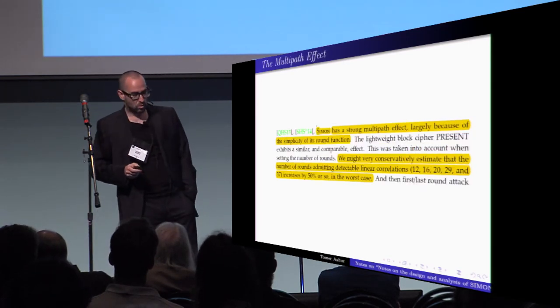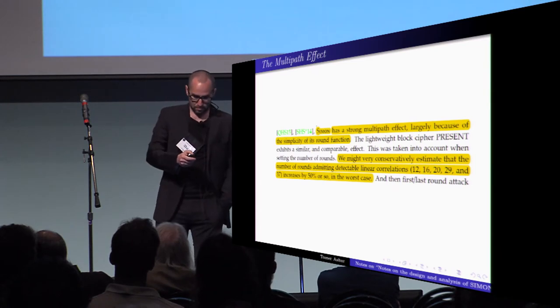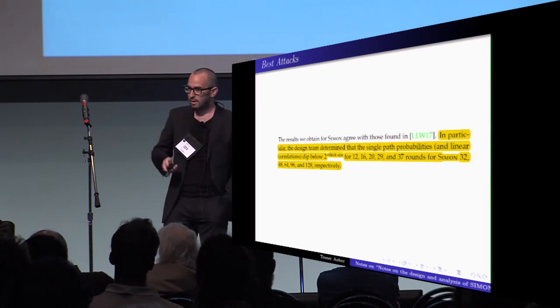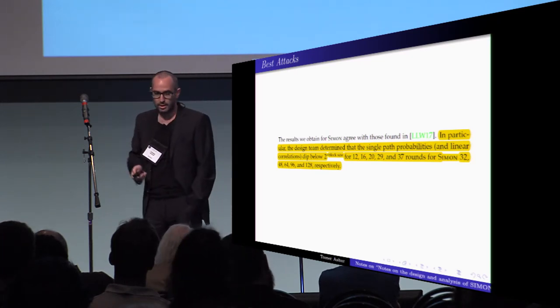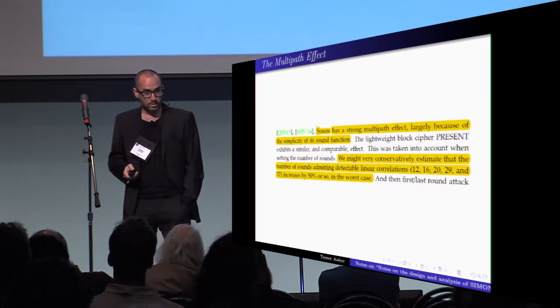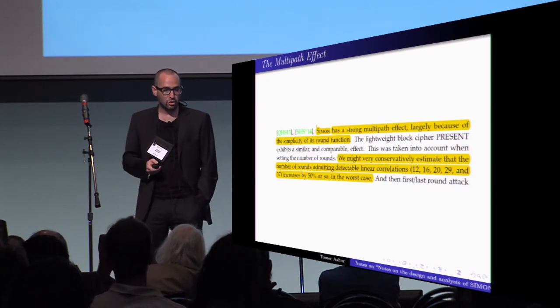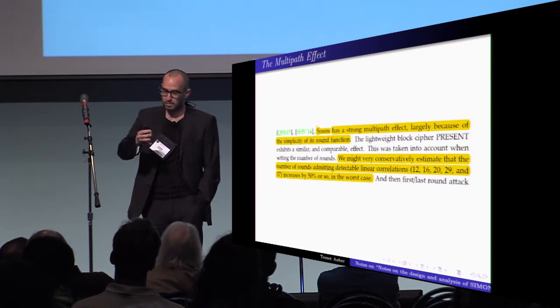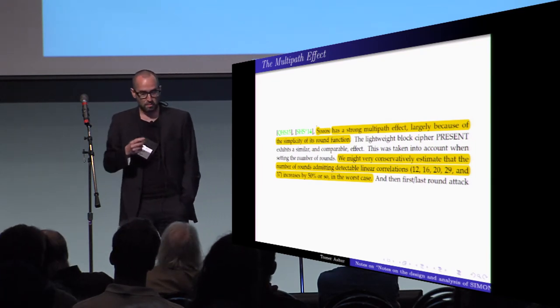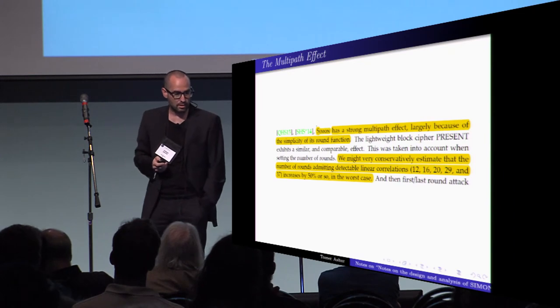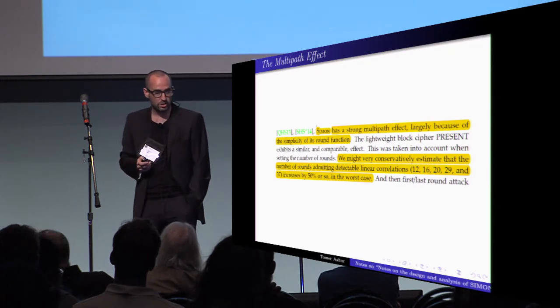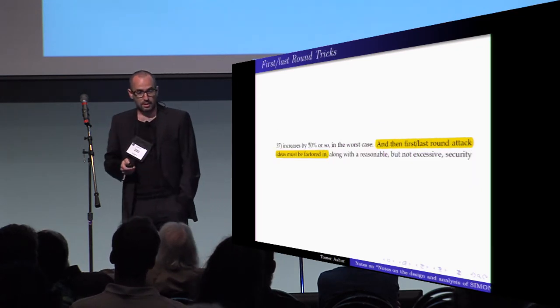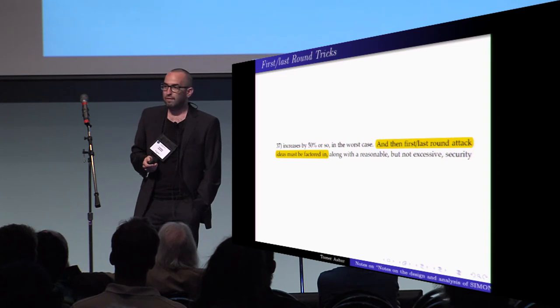I'll talk about that a bit more later. So that's the number of rounds they're saying that is the best that academics could find, and they agree with that. And then they're saying that Simon has a strong multipath effect largely because of the simplicity of its round function, and we can estimate it, we might very conservatively estimate that the number of rounds admitting detectable linear correlations increases by 50%.